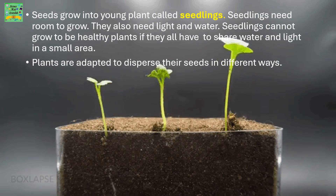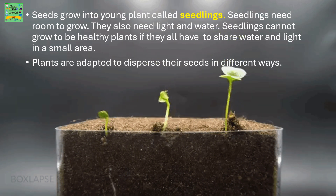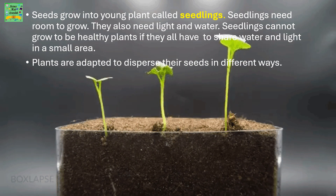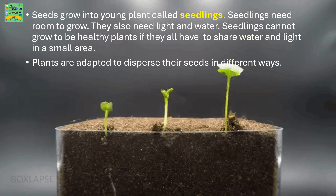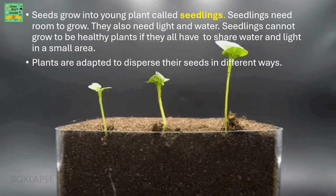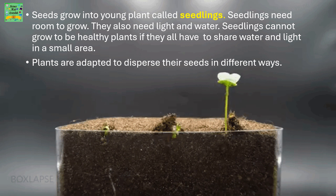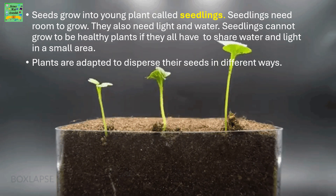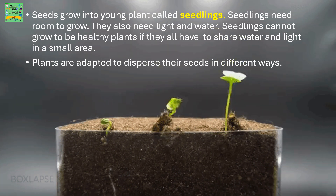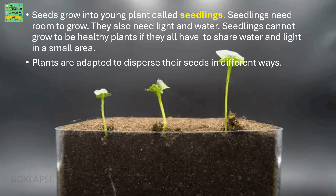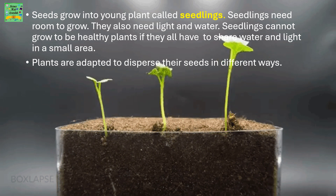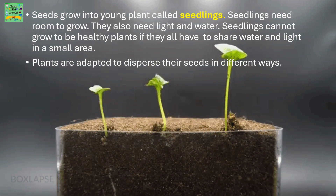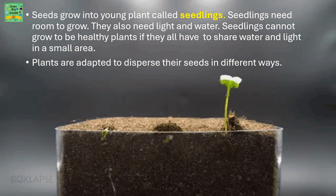Seeds grow into young plants called seedlings. Seedlings need room to grow; they also need light and water. Seedlings cannot grow to be healthy plants if they all have to share water and light in a small area. Plants are adapted to disperse their seeds in different ways.